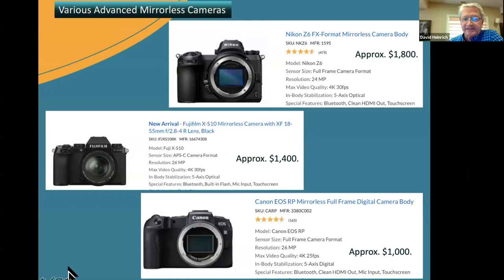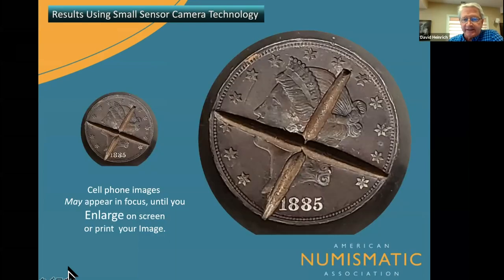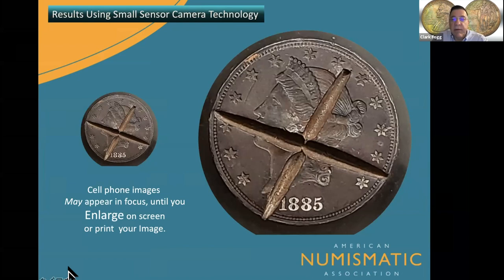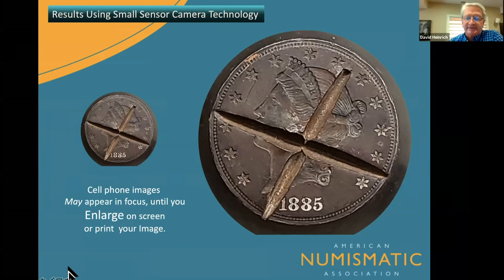Somebody just sent a message that Nikon is going to release a macro lens for the Z system next year. Excellent — things are changing. But again, just do some research before you invest.